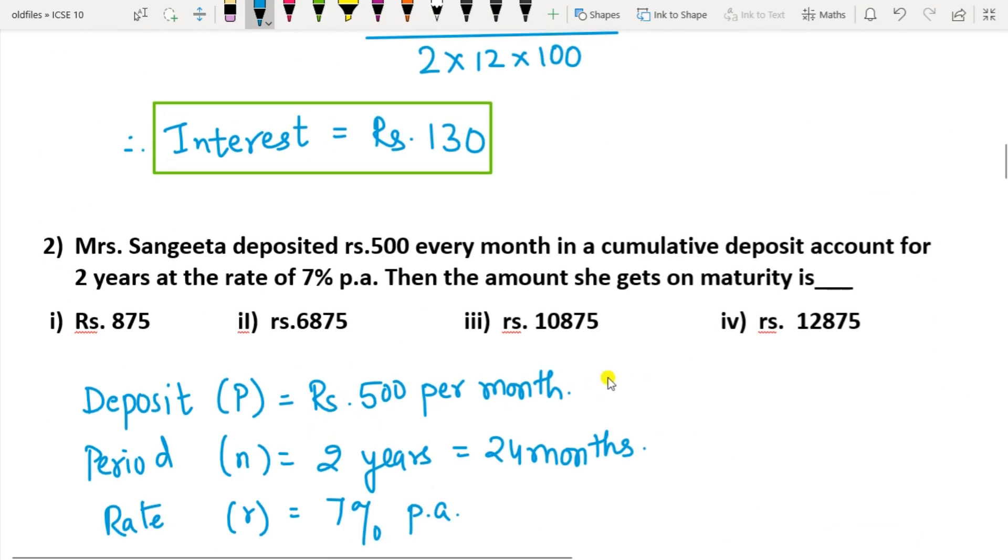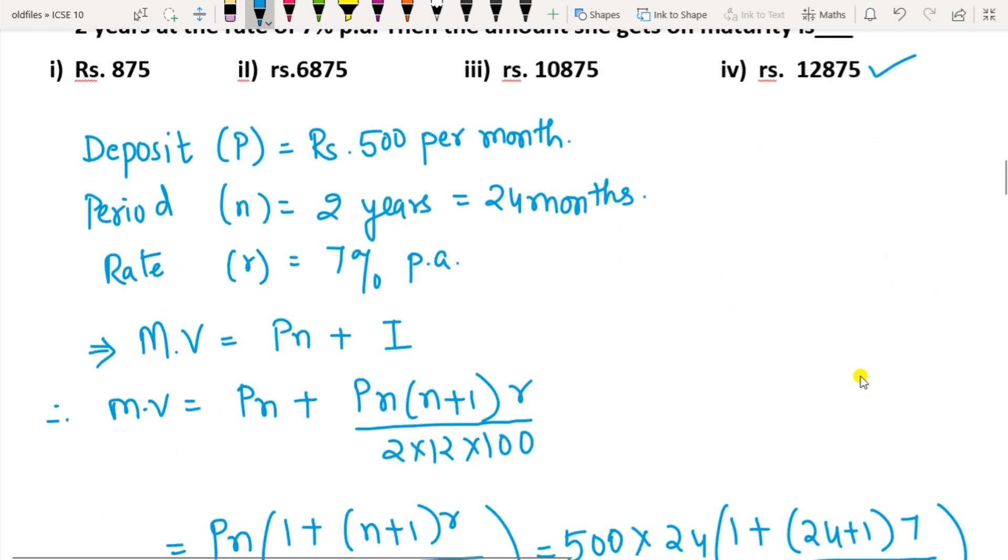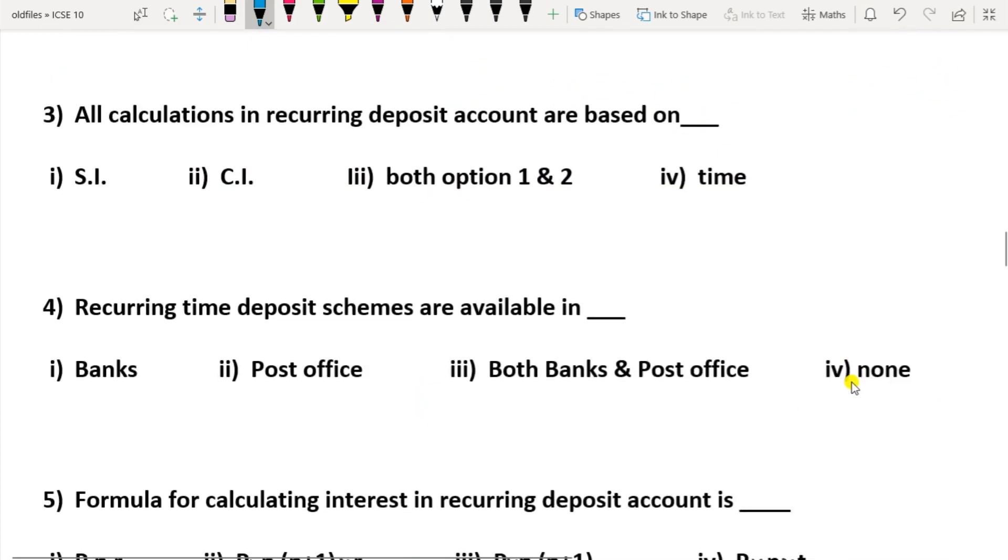From this option, option 4 here, 12,875 is the correct option. Question 3: All calculations in the recurring deposit account are based on - simple interest, compound interest, both option 1 and 2, or time. Actually, in your syllabus it is given as simple interest. We will be taking this, but actually in the bank they are considering both options, simple interest as well as compound interest, but here we will take simple interest.